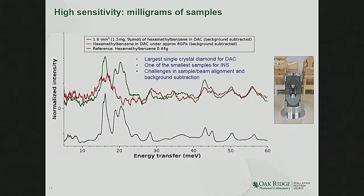Here is the diamond anvil cell with two polycrystalline diamond anvils. In our first test on the VISION beamline, we measured hexamethyl benzene: the black line is the reference spectrum, and the green line is the spectrum measured after two hours on the beamline with 1.5 milligrams — a 1.6 cubic millimeter sample. The green and black lines contain essentially the same features. We then applied pressure and the spectrum changed; we went to 4 GPa, and then one of the anvils broke.